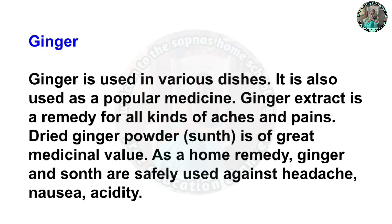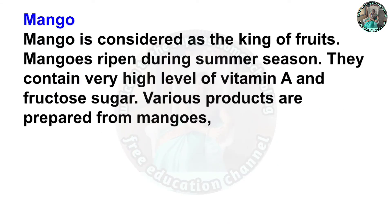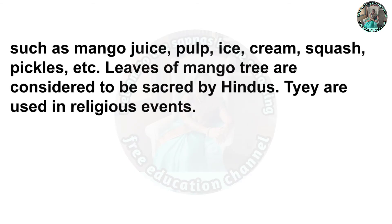Ginger: Ginger is used in various dishes and also as a popular medicine. Ginger extract is a remedy for all kinds of aches and pains. Dried ginger powder (suntha) is of great medicinal value. As a home remedy, ginger and suntha are safely used against headache, nausea, and acidity. Mango: Mango is considered the king of fruits. Mango ripens during the summer season; they contain very high levels of vitamin A and fructose. Various products are prepared from mangoes such as mango juice, pulp, ice cream, squash, pickles, etc. Leaves of the mango tree are considered sacred by Hindus and are used in religious events.